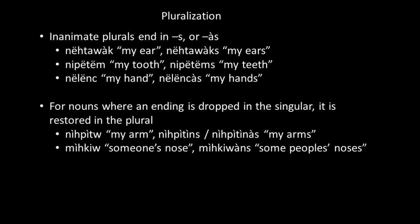For pluralization of inanimate nouns, you can add -s most often after vowels, or add -as as an ending. For example: nukhtawak (my ear) → nukhtawaks or nukhtawakas (my ears). Niputum (my tooth) → niputums (my teeth). Nilunds (my hand) → nilundsas (my hands). Some words have a short singular form but restore a fuller ending in the plural — so niput (my arm) → niputins or niputinas (my arms). Similarly, michkiu (someone's nose) → michkiwans (some people's noses) in the plural.